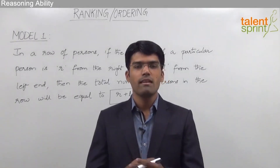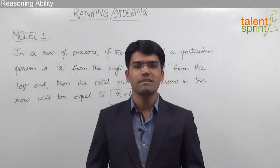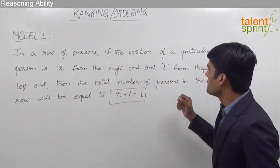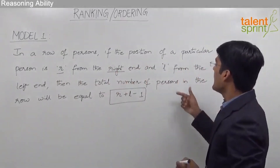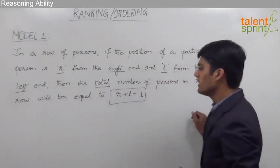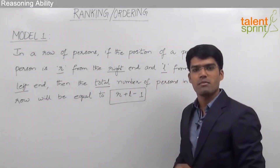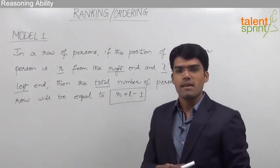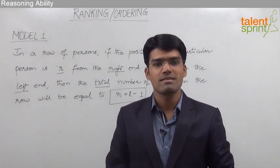Let us now discuss Model 1, where we can find out the total number of persons in a row when we know the position of one particular person from both ends. In a row of persons, if the position of a particular person is R from the right end and L from the left end, then the total number of persons in that row equals R plus L minus 1.